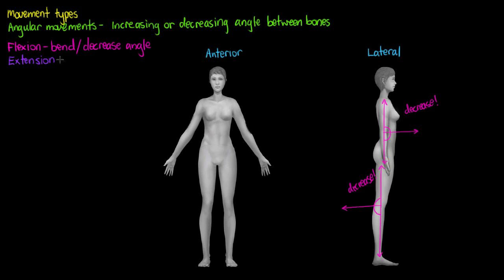Our next movement type is extension, and extension is simply the reverse of what we're doing in flexion — we're just straightening back out bones or joints that are flexed, so we're increasing an angle. If we straighten the elbow back out, we're extending it — so that's elbow extension. When we see someone standing in the anatomical position, we're seeing them with their limbs fully extended, so none of their joints are bent in any weird directions.